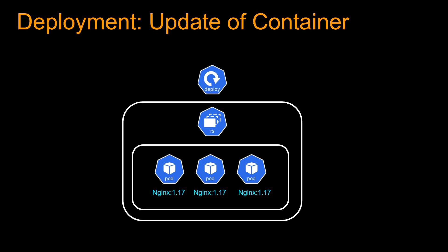You can think of deployment as another wrapper wrapping around a replica set — a higher-level construct than replica set. Just like a pod wraps around the container and a replica set wraps around the group of pods, a deployment object wraps around a replica set. Deployment provides declarative updates for pods and replica sets. You describe a desired state in a deployment file and the deployment controller changes the actual state to the desired state at a controlled rate. You can also define deployments to create a new replica set or remove existing deployments and adopt all their resources with new deployments.